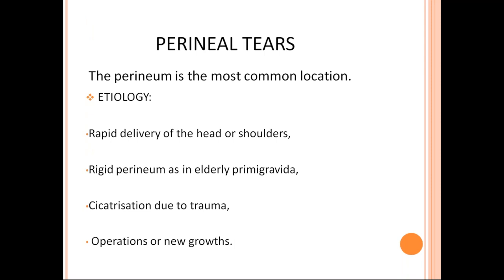Coming to perineal tears — these are the most common injuries encountered in normal delivery. The perineum is the most common location of injury. Causes include rapid delivery of the head or shoulders. In normal delivery, we do controlled delivery of the head with perineal support. Rigid perineum as seen in elderly primigravida — where the skin and tissues are not stretchable — leads to perineal tears. Scarification due to previous trauma, such as previous delivery scars from episiotomy, is also a cause as these scars are not stretchable.